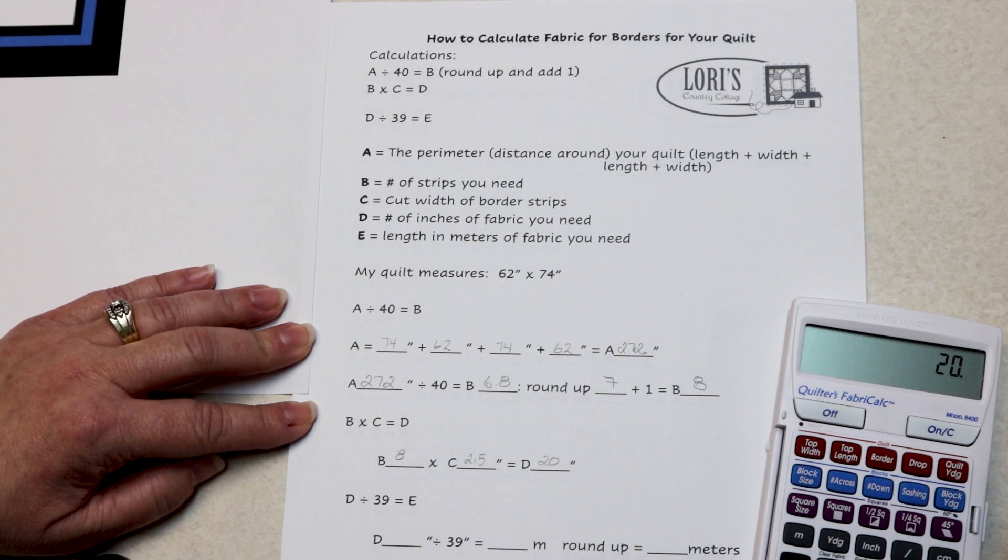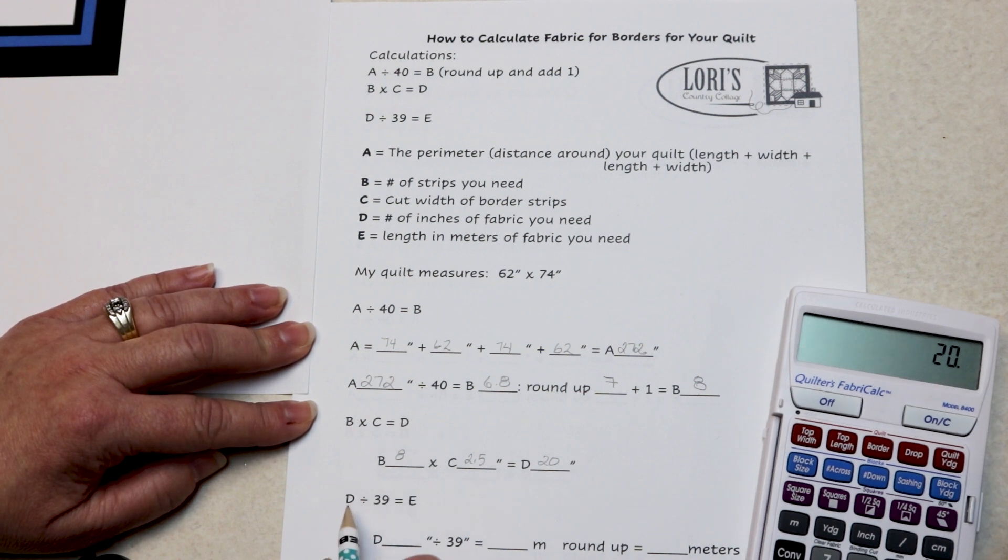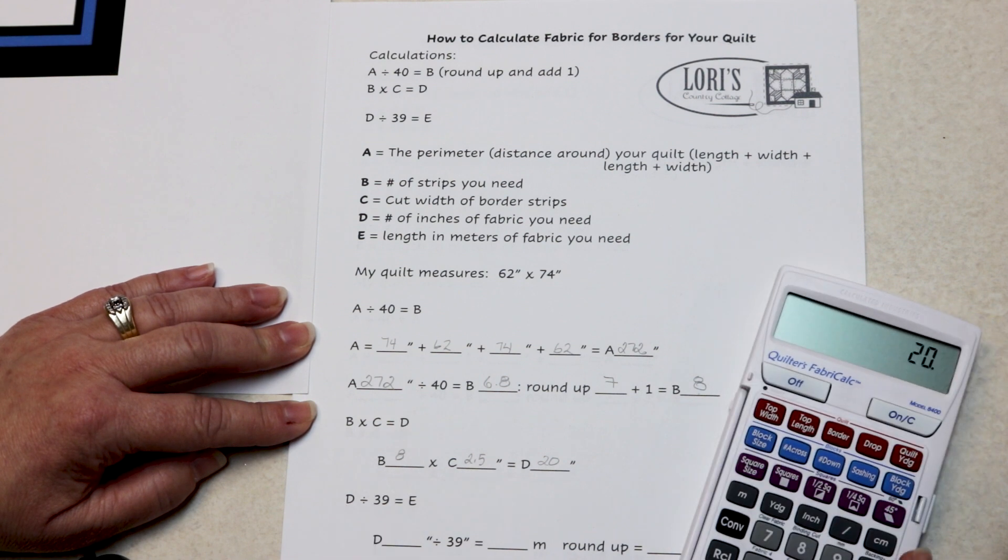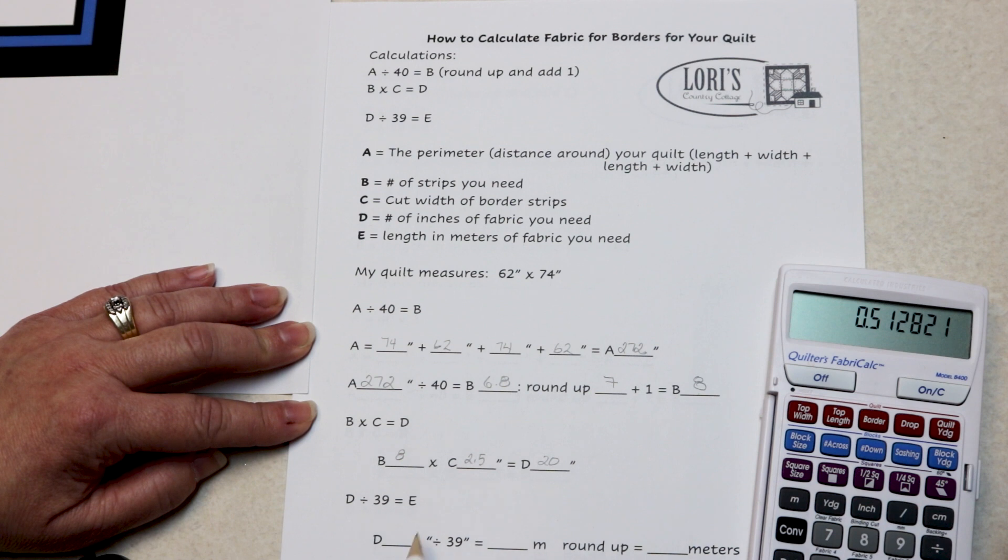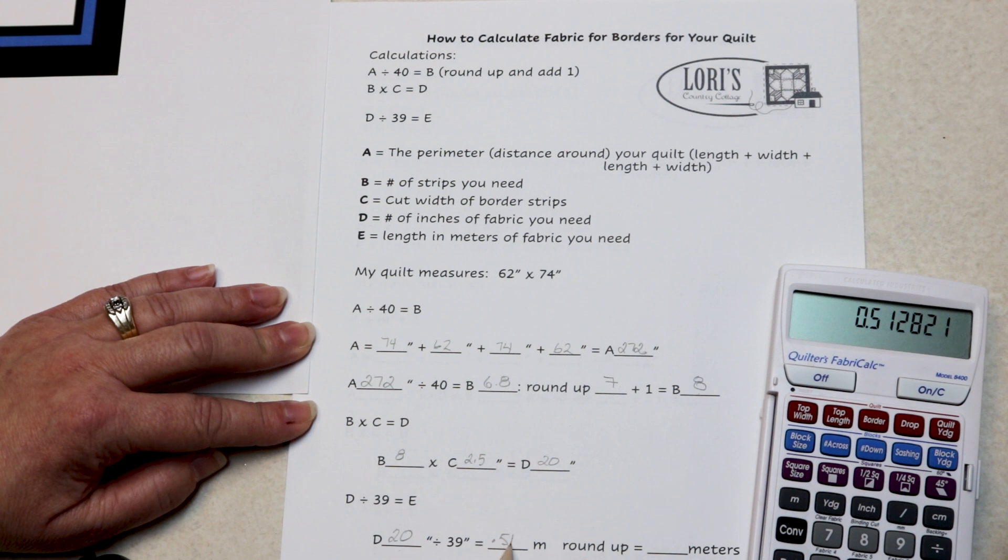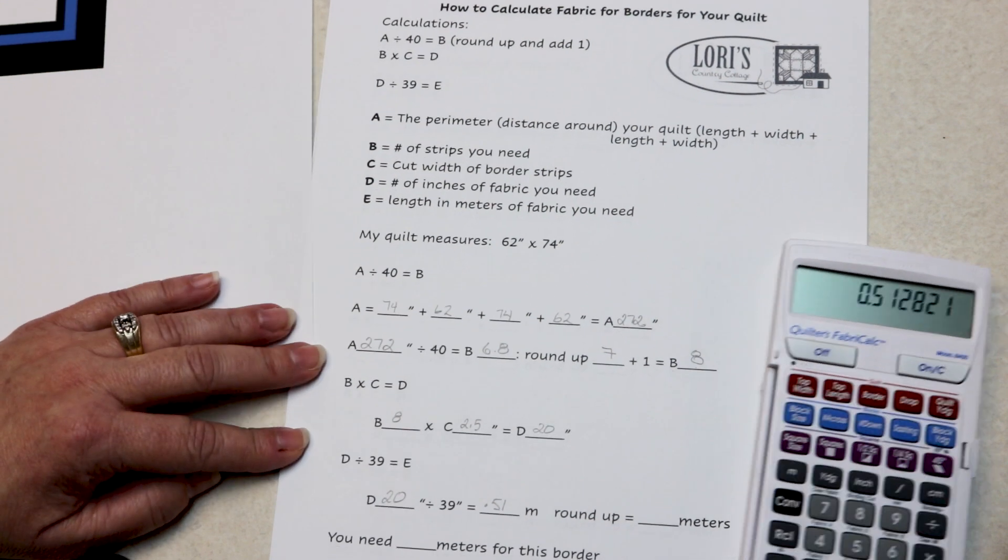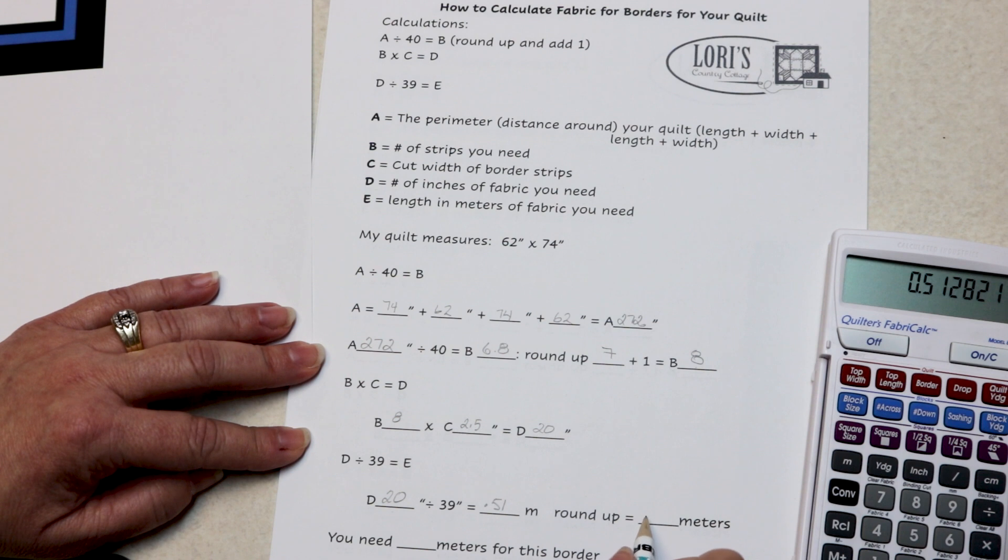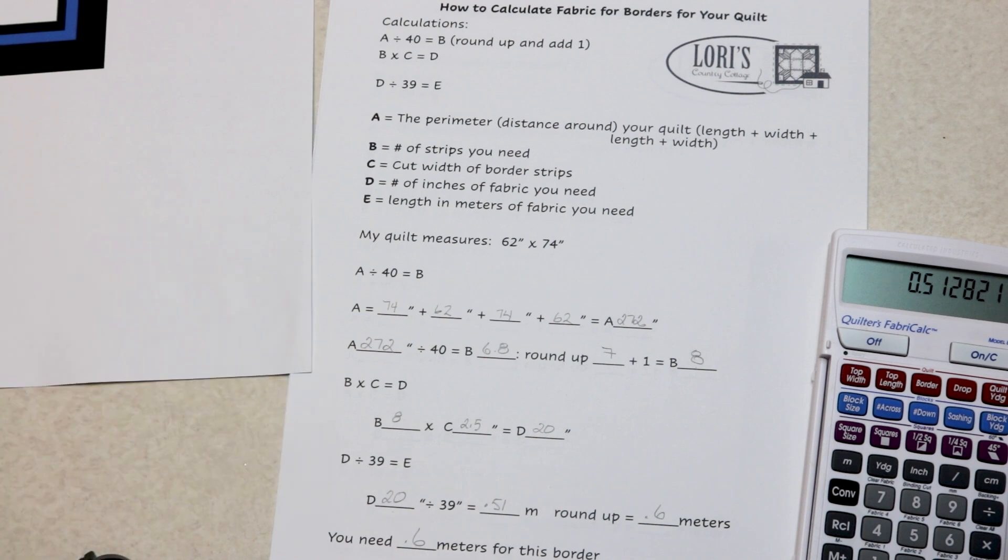Well, I can cut you 20 inches, but I need to know what that is in meters. Your number of inches divided by 39 gives you how many meters you need. So 20 inches divided by 39 is 0.51 meters. We need to round up to the next tenth. You need 0.6 meters for this border.